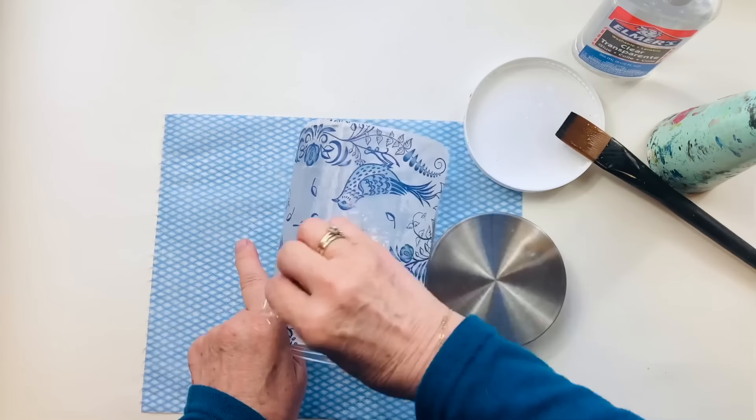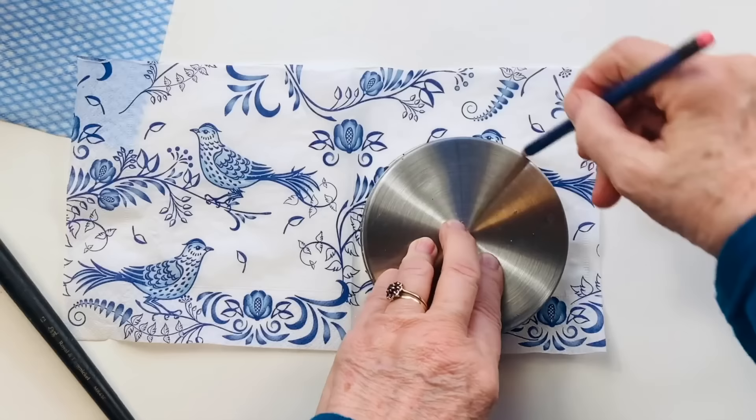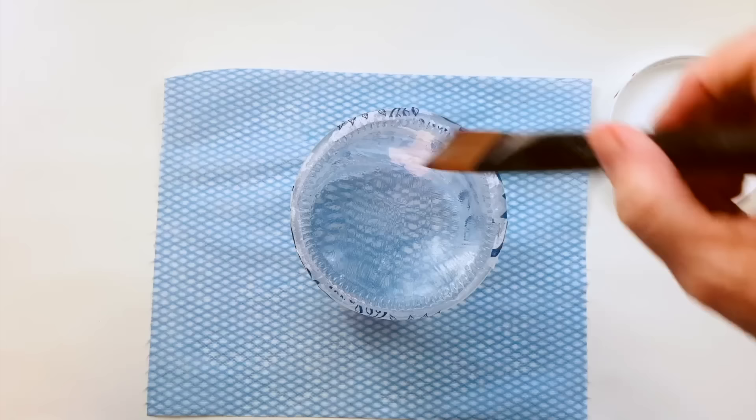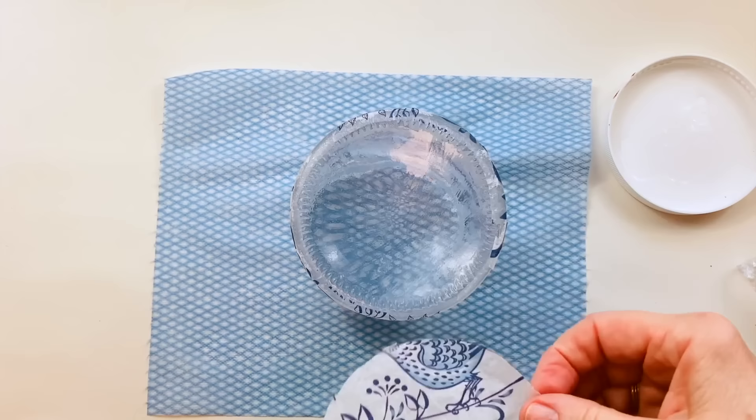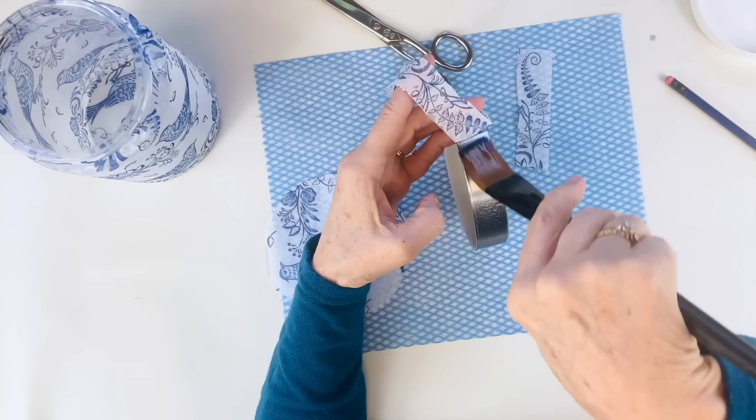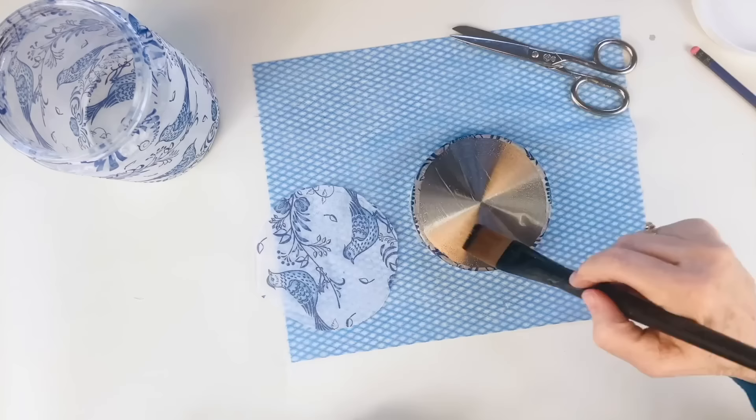Draw around the lid because that will be the right size and cut out the piece of napkin. Stick it to the bottom of the jar in the same way. Using the same process, cut out a circle for the top and a little strip for the edge and stick it in place.